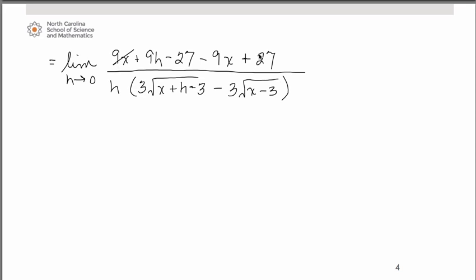So these canceled and these canceled. The h's then canceled because all you have there in the numerator is that 9h. So these h's cancel. So you have the 9 in the numerator. And then this whole expression with the square roots in the denominator,